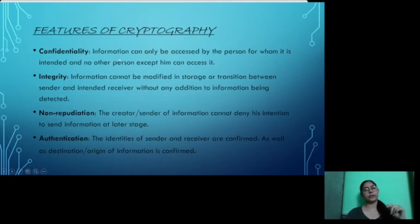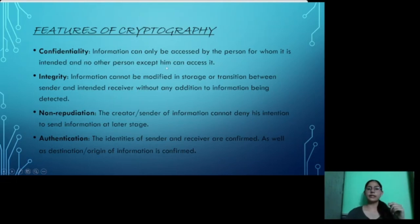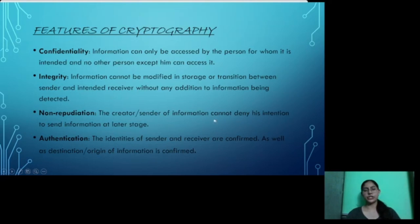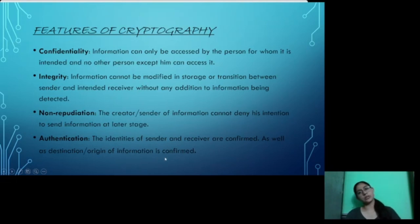Next is the features of cryptography. First is confidentiality: information can only be accessed by the person for whom it is intended. Second is integrity: information cannot be modified in storage or in transit between sender and receiver without detection. Third is non-repudiation: the creator or sender of information cannot deny their intention to send it at a later stage. Fourth is authentication: the identities of the sender and receiver are confirmed, as well as the destination and origin of the information.